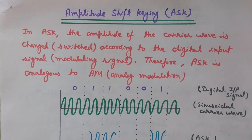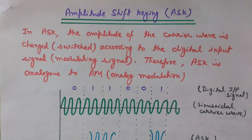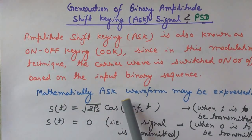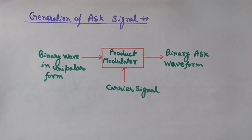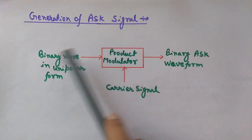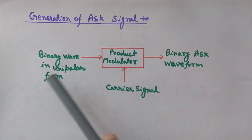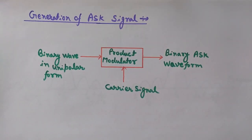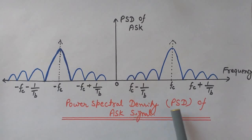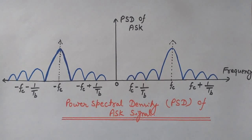Welcome to Engineering Made Easy. We are going to discuss amplitude shift keying, known as ASK. We will understand the concept and definition of ASK, along with its waveforms and how it looks. We will also see the mathematical representation of the ASK waveform, the generation of the ASK signal with its block diagram, and the power spectral density (PSD) of the ASK signal.